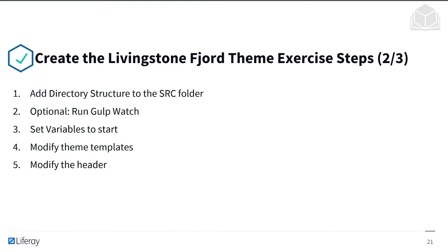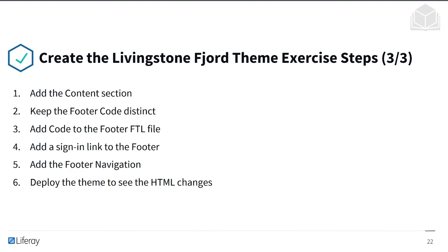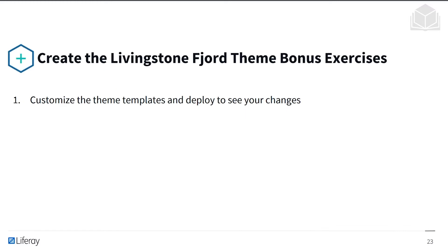We'll then add directory structure to the source folder, and as an optional step, we can run gulp watch. We'll set variables to start, as well as modifying the theme templates and the header. We'll add the content section and keep the footer code distinct. We'll add code to the footer.ftl file, add a sign-in link to the footer and footer navigation, then deploy the theme to see the HTML changes. There's also a bonus exercise to customize the theme templates and deploy to see your new changes.